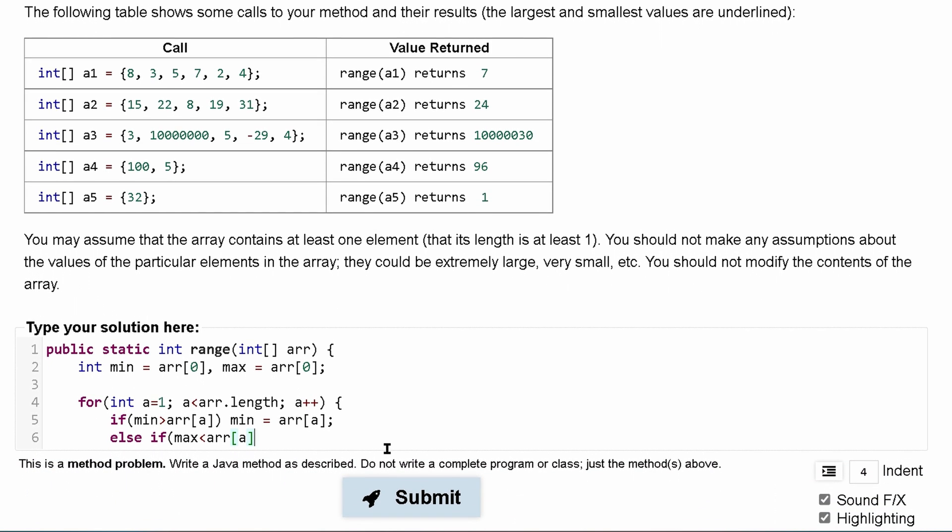Because that means this current element is bigger. If that's the case, we're going to set our max equal to our current array element.